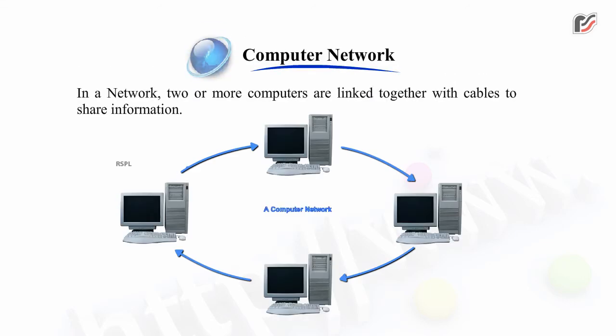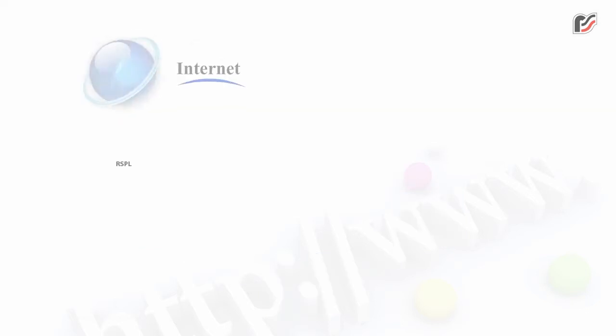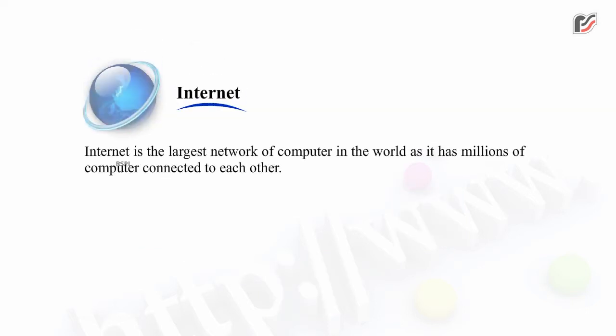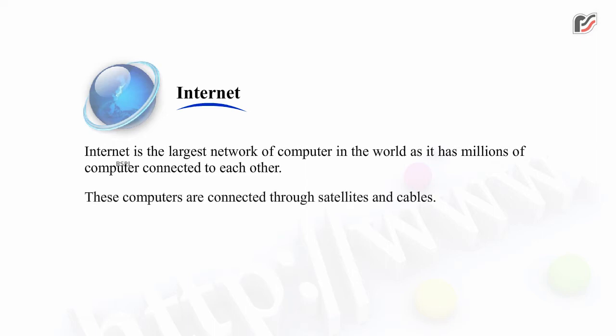Chapter 8 Internet – Computer Network. In a network, two or more computers are linked together with cables to share information. Internet is the largest network of computers in the world, as it has millions of computers connected to each other. These computers are connected through satellites and cables.